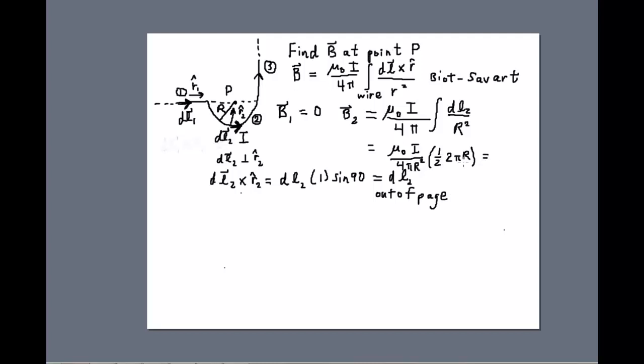Let's see what happens with the 2's cancel. And we end up, the pi's also cancel, and one of the factors of R cancels. So we end up with mu naught i over 4R. And it's out of the page. So that is our second field component. And now what about B3?